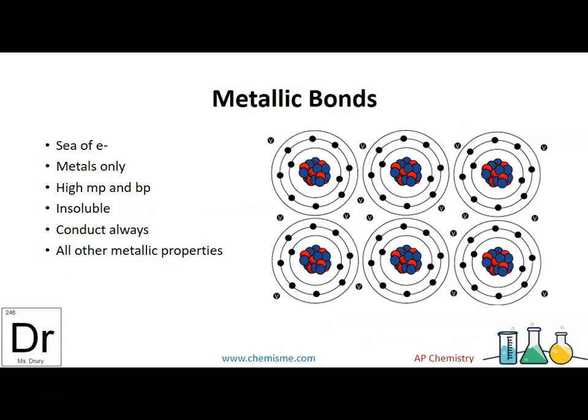Our next bond are metallic bonds. They have a sea of electrons. They're metals only with high melting and boiling points, just like normal metals. They're insoluble. I mean, I can't even imagine a metal dissolving in water. And they can always conduct because of these sea of valence electrons. That creates that ability to flow. And all other metallic properties you might know, like malleability or ductility.